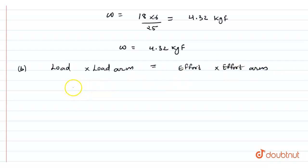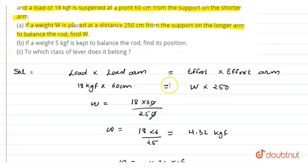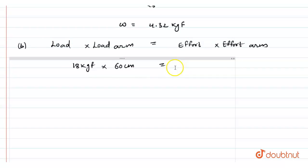The load given is 18 kgf and the load arm is given as 60 centimeter, whereas the effort here is given as 5 kgf. And we have to find the effort arm. I am writing effort arm as E_A. So our effort arm comes out to be 18 into 60 divided by 5. By canceling 60, we will get 18 into 12...